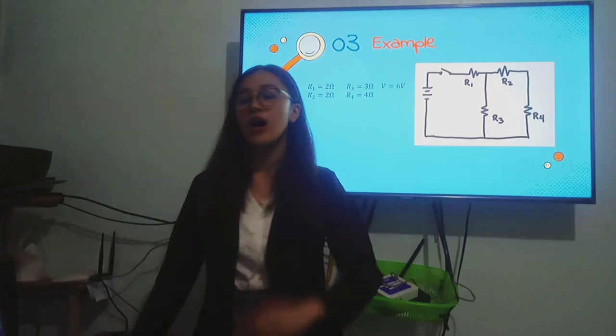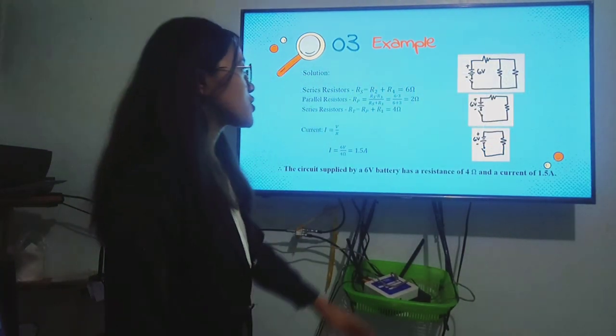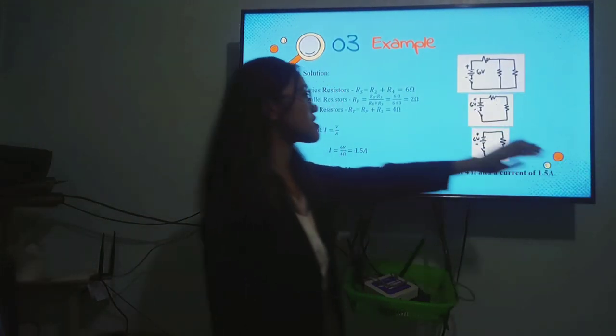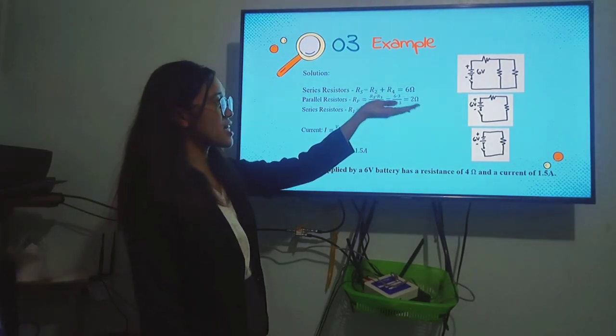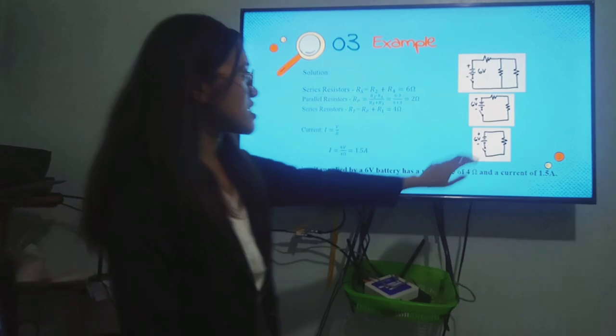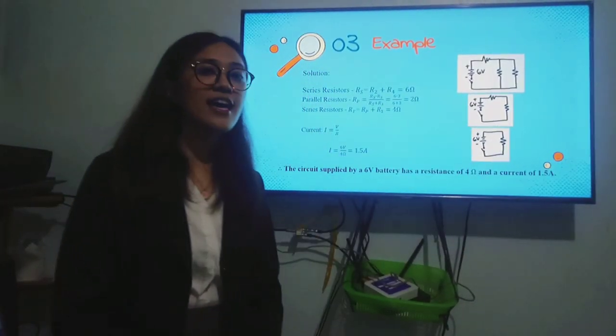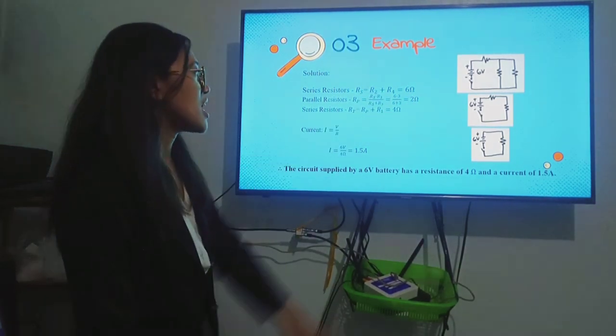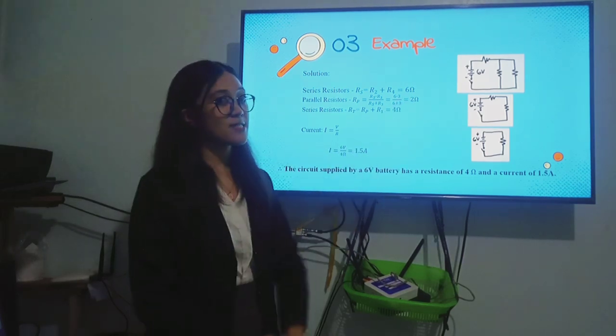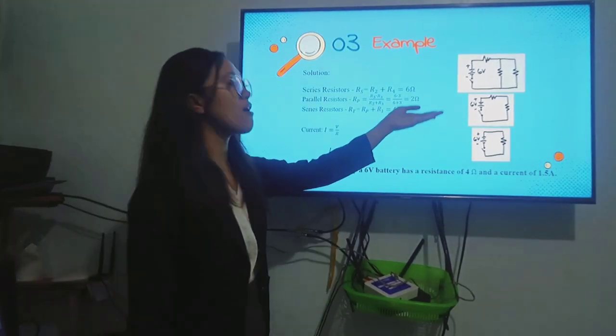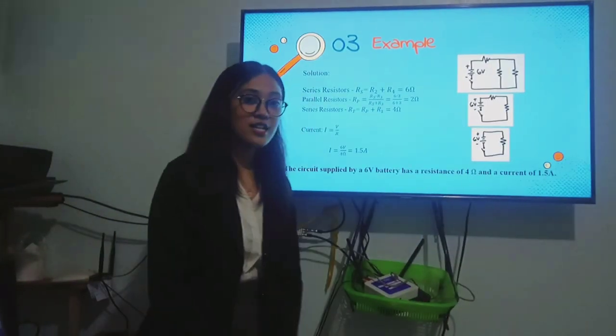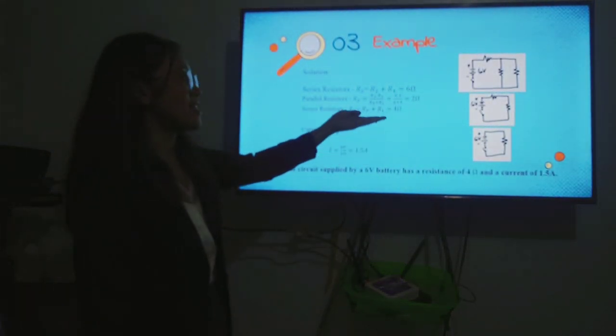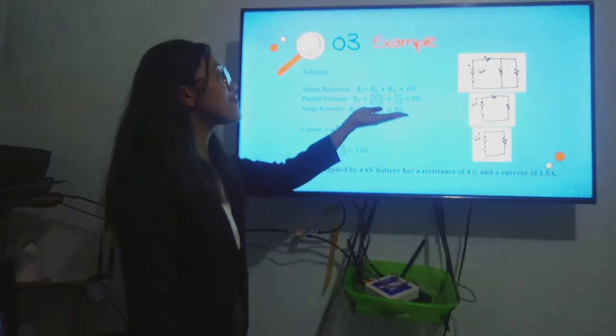Now, first thing we will need to do to analyze this circuit is to combine resistors. Earlier, we have resistors that are in series in this part. Because they are in series, we simply add R2 and R4, which is equal to 6 ohms. Now, this is the new circuit. They are already in parallel. Because they are in parallel, we use the parallel formula for combining resistors. 6 times 3 divided by 6 plus 3, which is equal to 2 ohms.